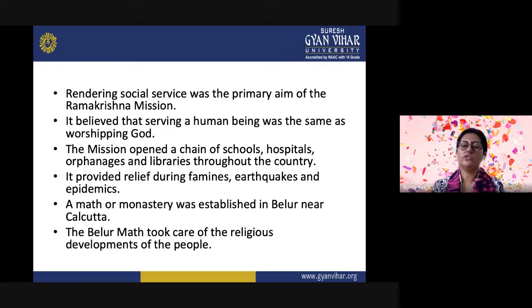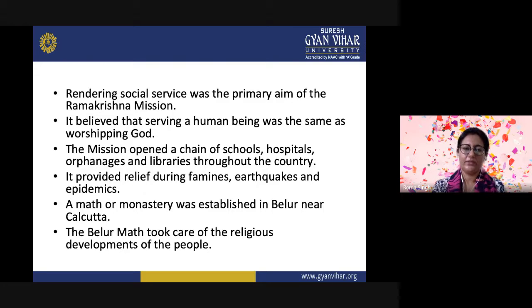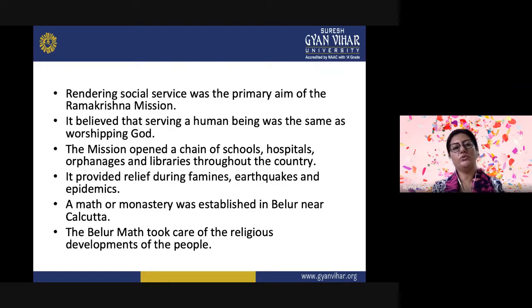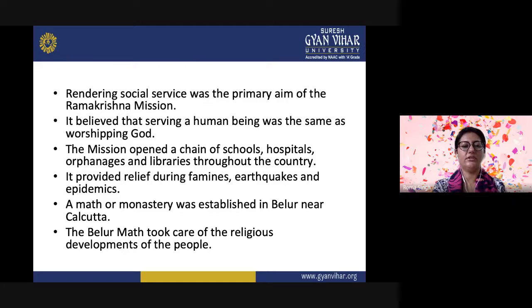Rendering social service was the primary aim of the Ramakrishna Mission. It believed that serving a human being was the same as worshipping God. The mission opened a chain of schools, hospitals, orphanages, and libraries throughout the country. It provided relief during famines, earthquakes, and epidemics. A mutt or monastery was established in Belur near Calcutta — the Belur Math — which took care of the religious development of the people.